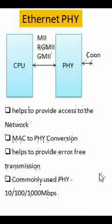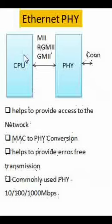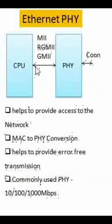Ethernet PHY is a device which helps to provide access to the network. If you see here, this is a CPU — it could be an FPGA or your microcontroller — which is interfacing to the PHY over the MAC layer. This is called the MAC, or Media Access Control, layer.